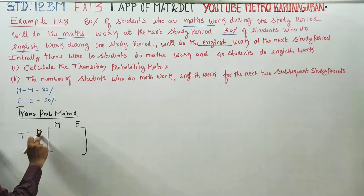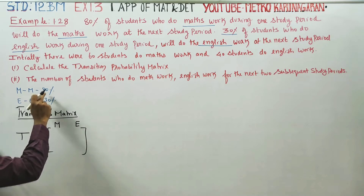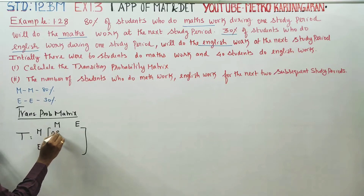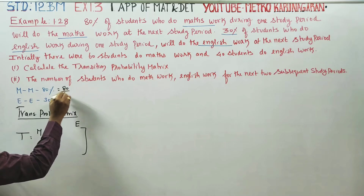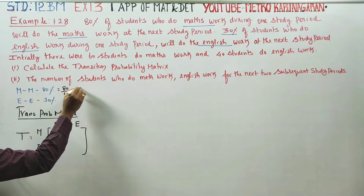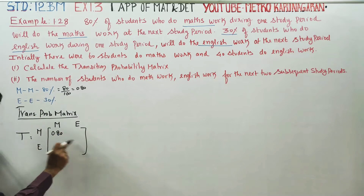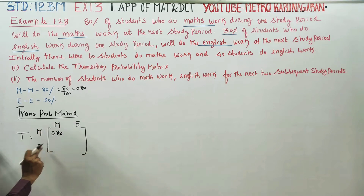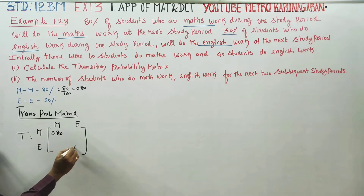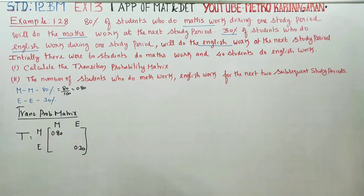In the matrix, the location Maths-to-Maths is 80%, which is 0.80. The location English-to-English is 30%, which is 0.30. These two values are now filled in.